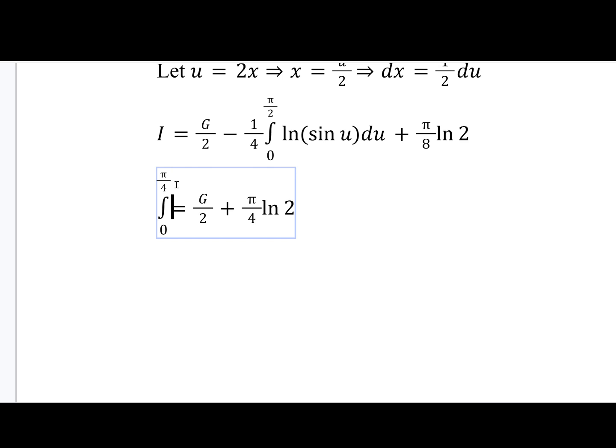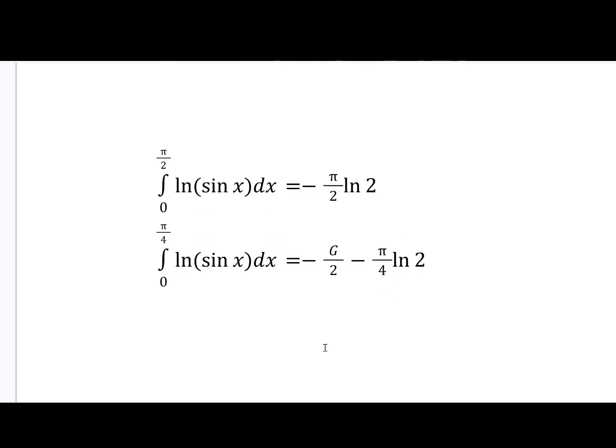And amazingly, the integral from 0 to π/4 of log cosec x is G/2 plus π/4 log 2. We have Catalan's constant, π and log 2 all in one answer. And these are the two results of the video. Thanks for watching. I'll see you next time.